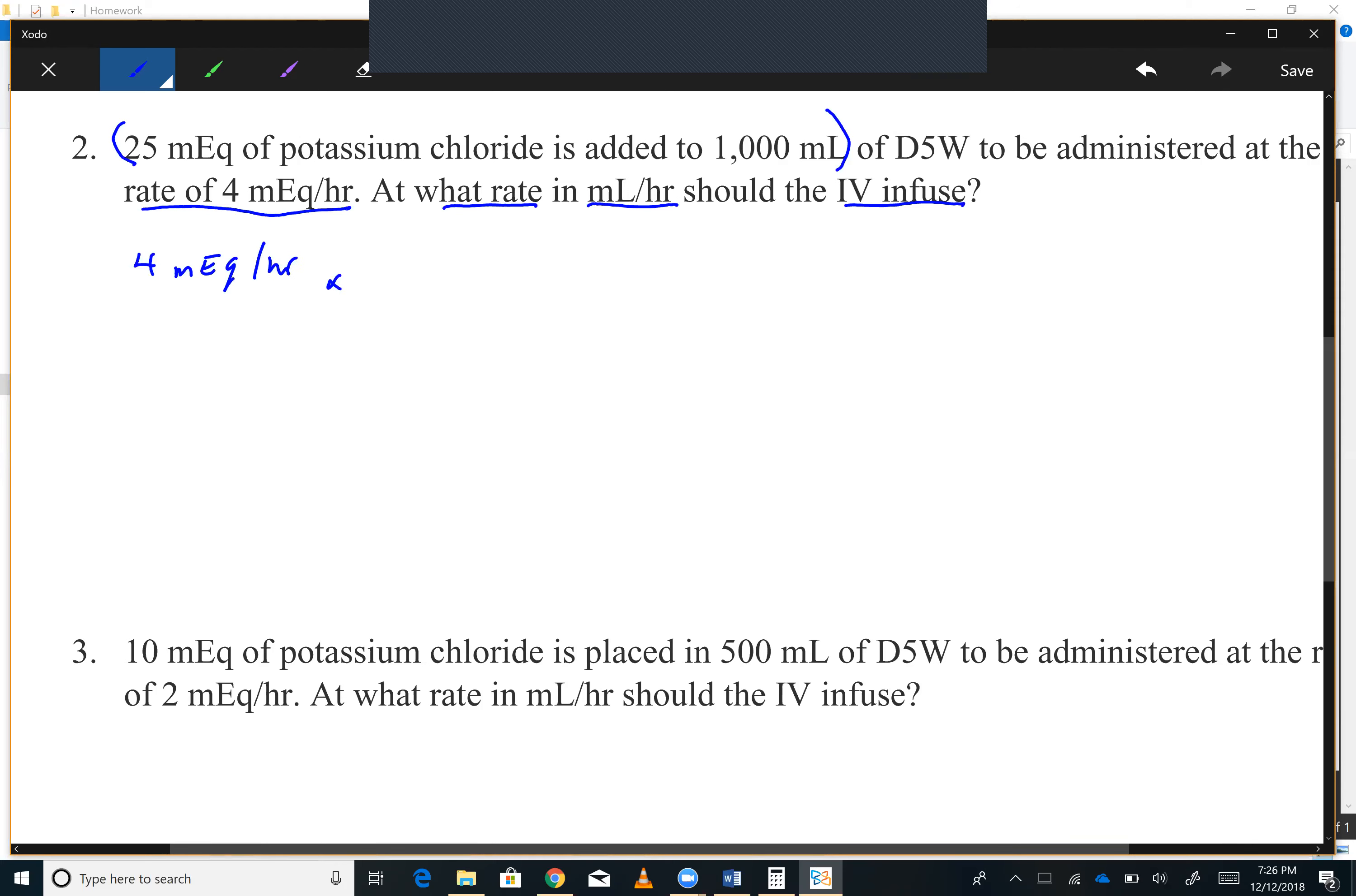Then over here, you're going to multiply that by—25 MEQs goes on the bottom because remember they want to be opposite each other. And 1000 mLs goes up here.